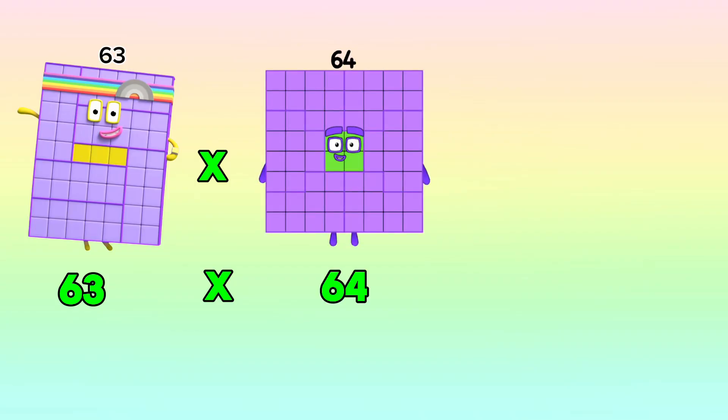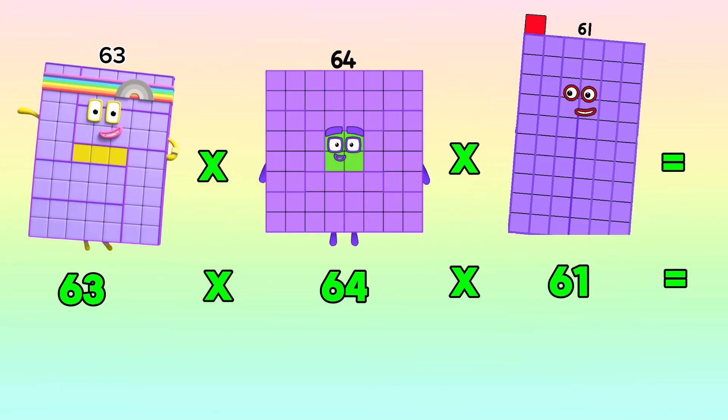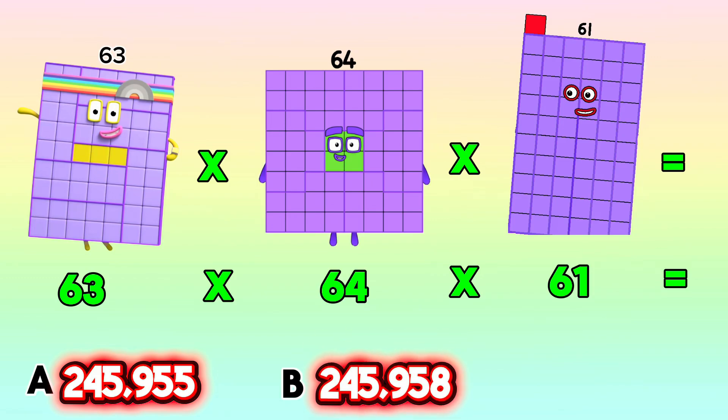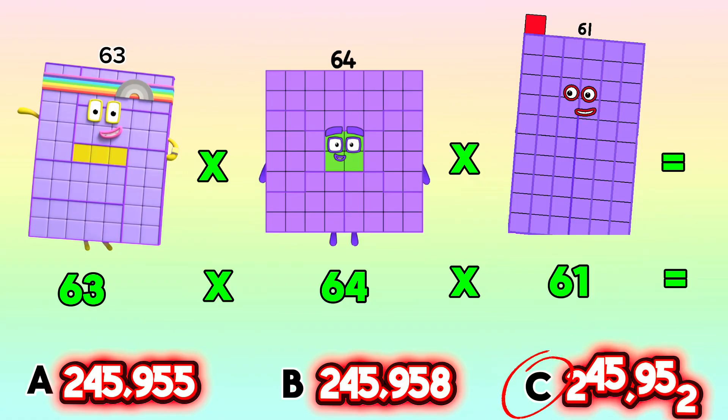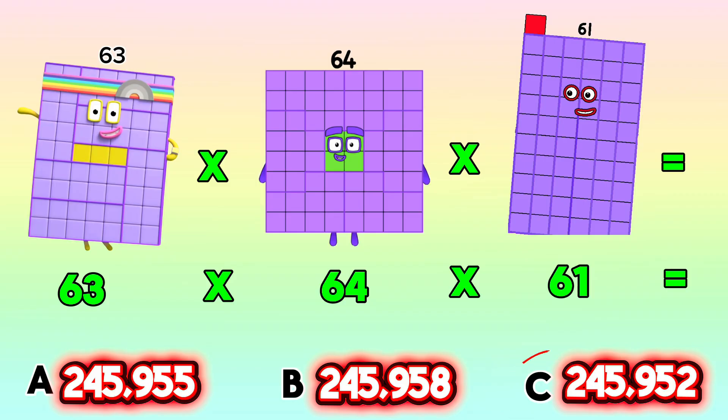63 times 64 times 61 equals: A, 245,955? B, 245,958? Or is it letter C, 245,952? And the correct answer is letter C, 245,952.